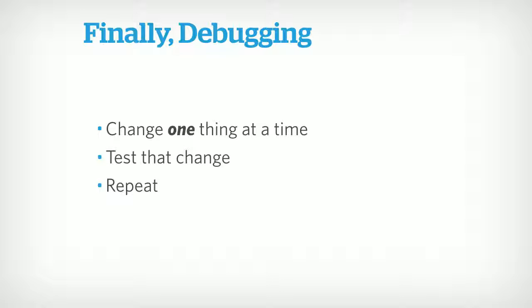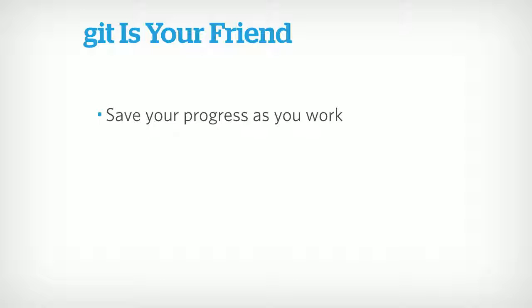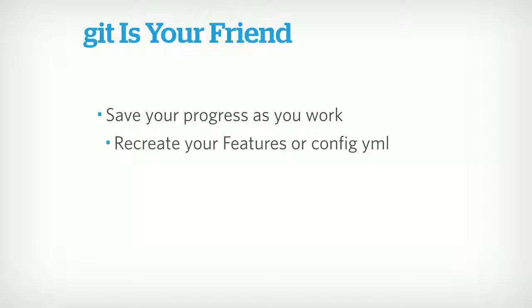Git is your friend, particularly here. Save your progress as you work — every time you make a change with a positive outcome, make a git commit. Even if you wind up with 30 commits you can squash them later. You're able to see: these are the things I changed, when I changed them, and what the outcome was. It's also great if you're using Features or config YAML files, because you can see that since the last time you dumped all these files to git, somebody changed nine things on the production site — they added a role, added a permission. If you're not using config management, you definitely should. It's a little weird at first but it's so worth it. It helps make the rabbit holes more manageable.